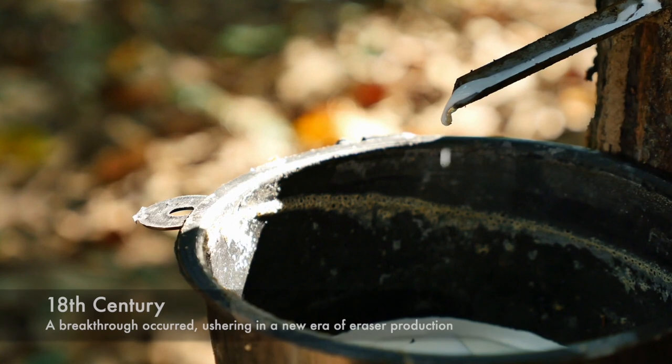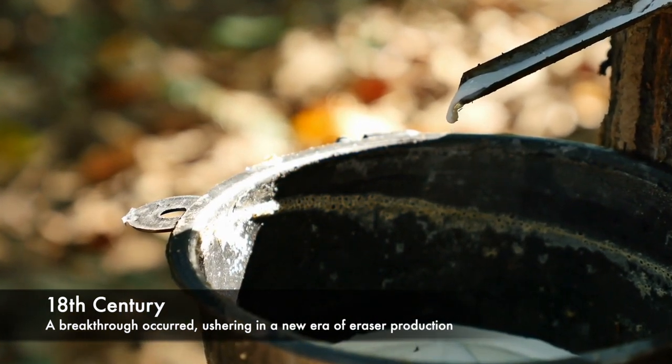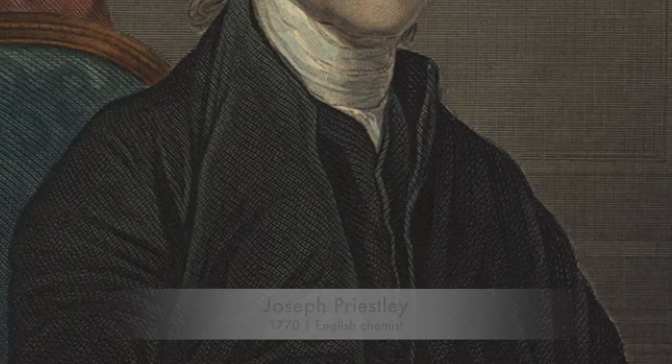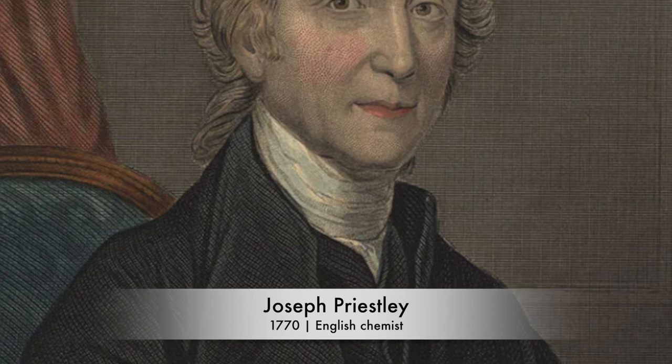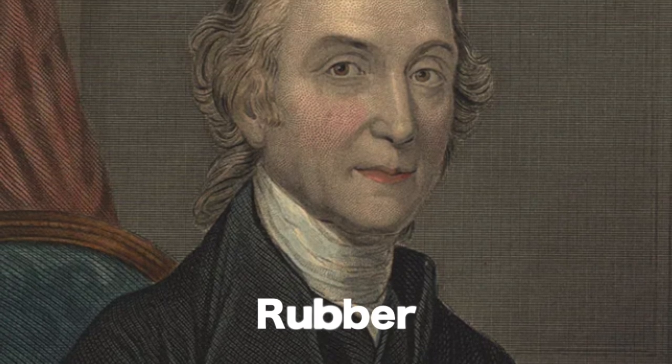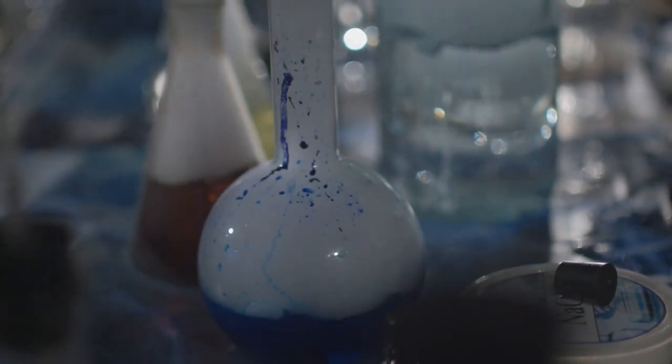It wasn't until the 18th century that a breakthrough occurred, ushering in a new era of eraser production. In 1770, English chemist Joseph Priestley discovered that a substance called rubber could be used to erase pencil marks. However, natural rubber had its limitations, leading to the search for alternatives.